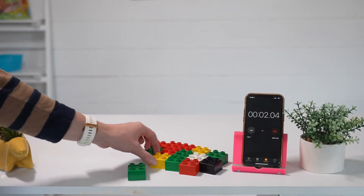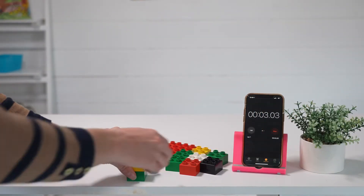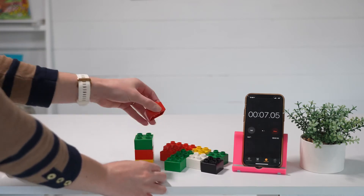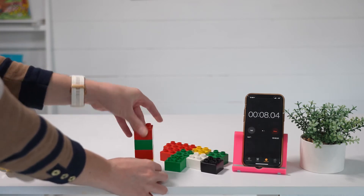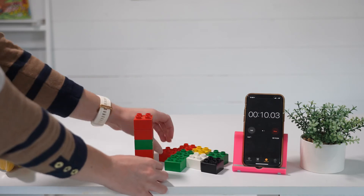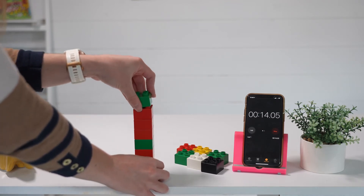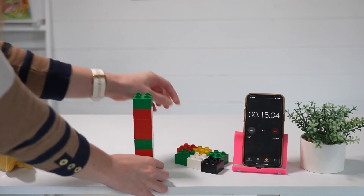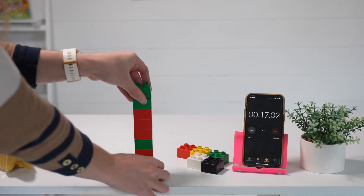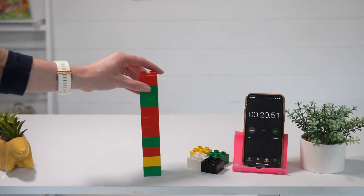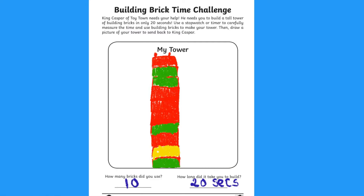In this activity, children have to build the tallest tower they can using bricks in 20 seconds. One child is a timekeeper and says when to start and stop, and the other is a builder. How high can they get their tower in 20 seconds? This could be adapted using different lengths of time. Can children draw a picture of their tower and show how many bricks they used?